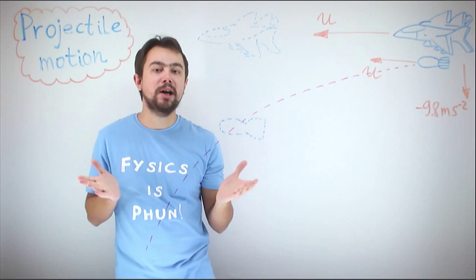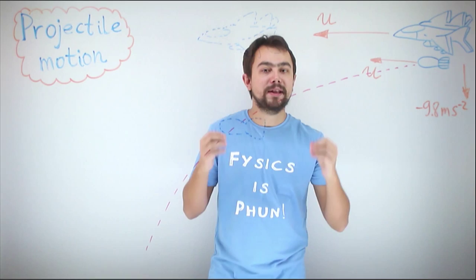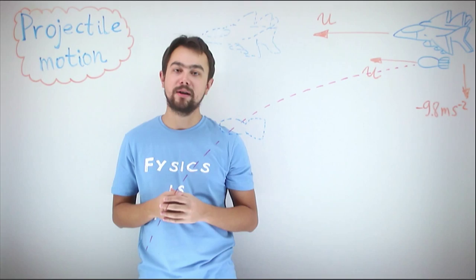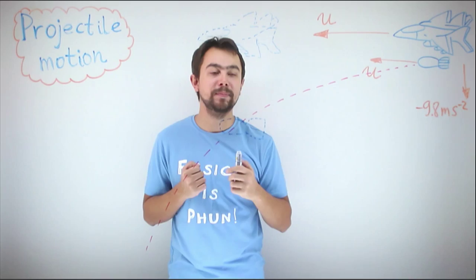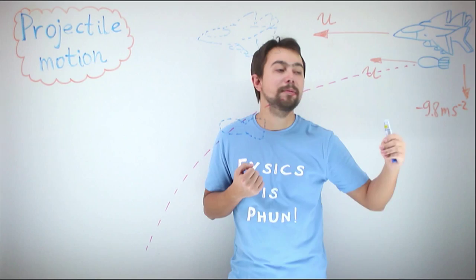It took them some time to realize that they needed a time-delay fuse so that the explosion would take place a few seconds after the bomb hits the ground. The first thing we need to realize is that for a launched projectile, the vertical motion is independent of its horizontal motion. We can use the SUVAT equations to describe the vertical motion of the bomb.